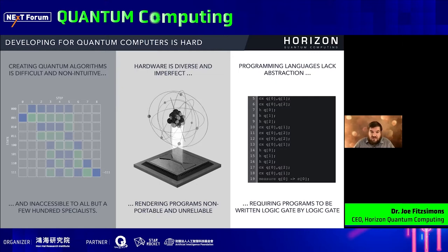Another barrier is that at the moment the hardware is imperfect. It's very noisy and there's a diverse range of quantum hardware architectures. Writing code that has high performance on one generally means it won't work well on another piece of hardware, so your code is not really portable. Finally, the languages we have today really lack abstraction — they're really piecing together quantum circuits gate by gate by gate.